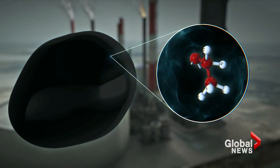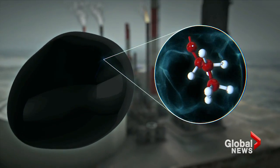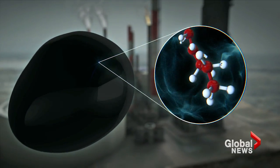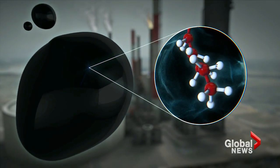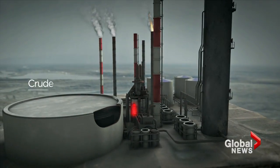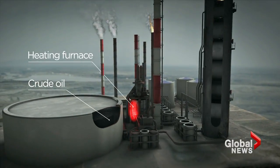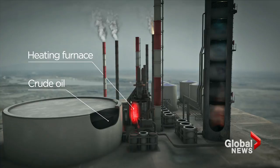Different hydrocarbons have different sized molecules. The longer the molecule, the more energy in the form of heat is needed to refine it. The crude is superheated, so it becomes vapor.